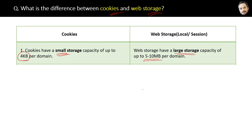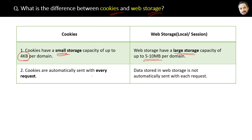The second difference is cookies are automatically sent with every request. So whenever you send any request to the server, cookies will automatically be sent without any extra line of code. Whereas data stored in web storage is not automatically sent with each request — you may have to write some code for that.